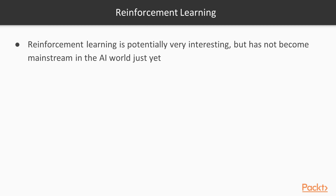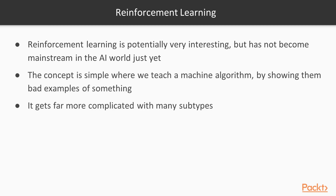Now let's talk about reinforcement learning. Reinforcement learning is potentially very interesting; however, it's not totally mainstream in the AI world just yet because applications are somewhat niche for now. There's a lot of potential to apply this to other fields, especially in robotics. The concept is fairly simple: imagine teaching someone where when they make a mistake you give them a penalty, and if they do something good you give them a reward. That reward-based learning is essentially how reinforcement learning algorithms learn.